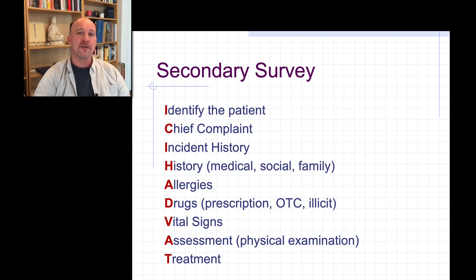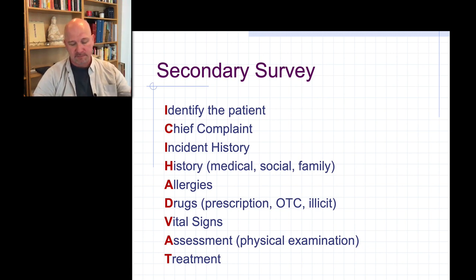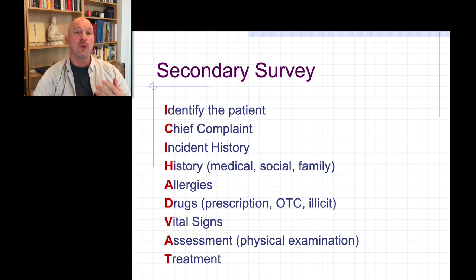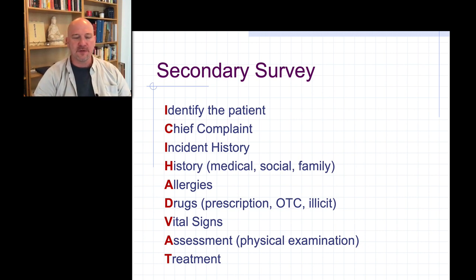In the secondary survey, the way we remember it is 'ICI had vitals assessed and treated,' where the C is for chief complaint. After identifying ourselves in the primary survey, we ask the patient their name — say 'Fred' — and then we ask: 'What seems to be the problem today?' Fred presents in his own words. He might say, 'My hand is really sore. I woke up, it's aching, and I think I better get it checked.' That's a fairly nondescript chief complaint.